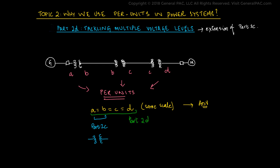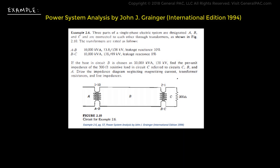Here in Part 2d, we will consider a power system with more than one transformer, thus tackling multiple voltage levels. We will take an example from the book Power System Analysis by John J. Granger. Example 2.6 states: three parts of a single phase electric system are designated A, B, and C, and connected to each other through transformers as shown in figure 2.10. The transformer from A to B is rated at 10,000 kVA, 13.8 kV on the primary side, 138 kV on the secondary side — a step up transformer. The transformer between B and C is also 10,000 kVA and steps down from 138 kV in region B to 69 kV in region C.